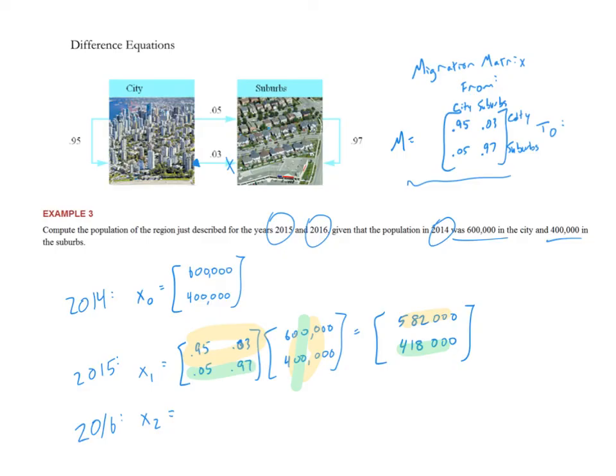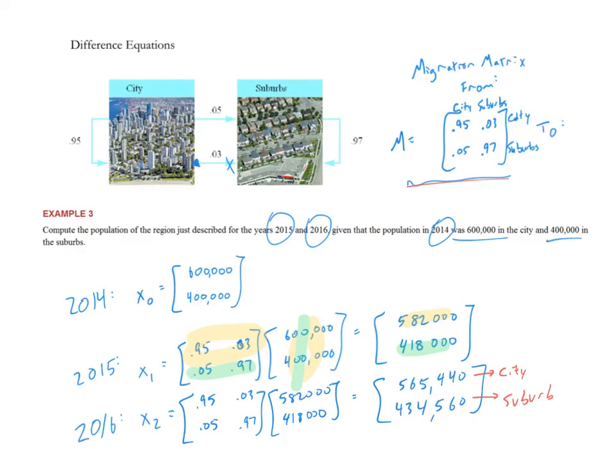The last one, we do the exact same thing. Take our migration matrix times the previous answer. 0.95, 0.05, 0.03, 0.97 times the previous answer. And that produces populations in the city, 565,440, and the other one is 434,560 in the suburbs. So this is our city population and this is our suburb population. That's how that type of problem works. You'll see a couple of these in the homework. You set up that migration matrix, and then it's just matrix vector multiplication from there on.